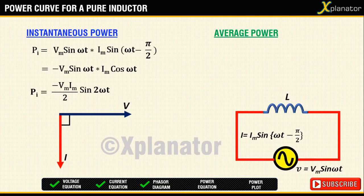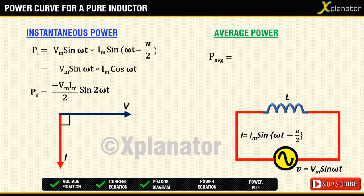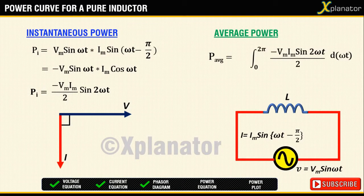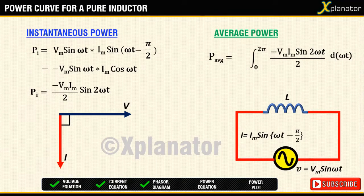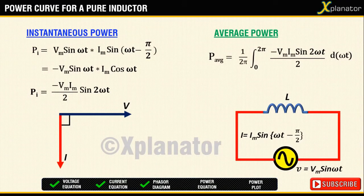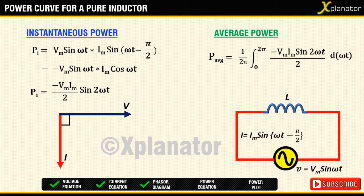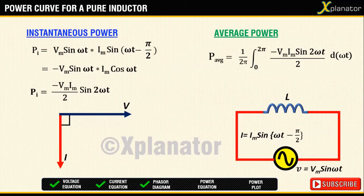Next, to find the average power, integrate this equation over the whole cycle, i.e., from 0 to 2π and divide it by the total time interval. Upon solving, you will notice that the integral returns a value 0,